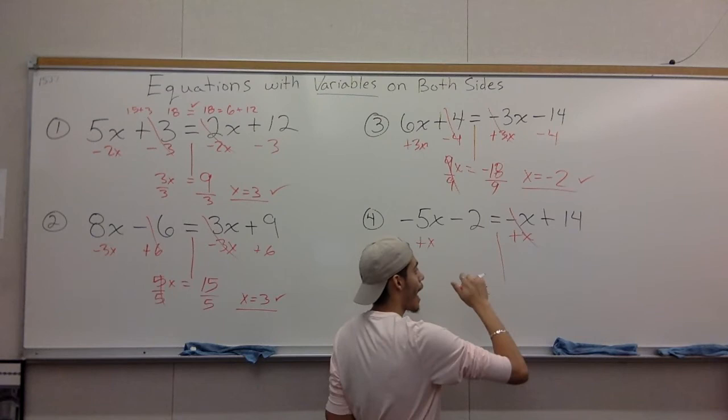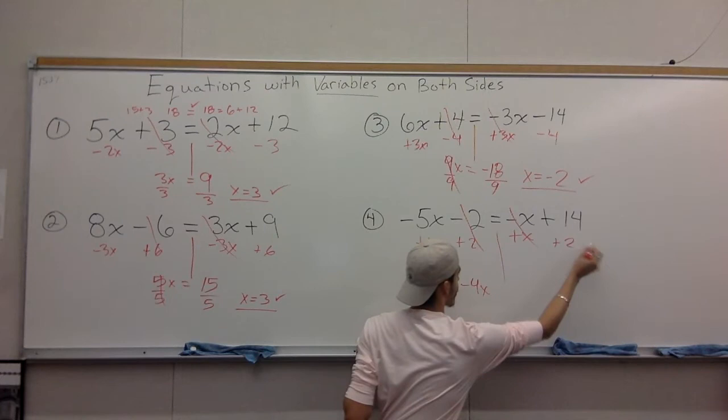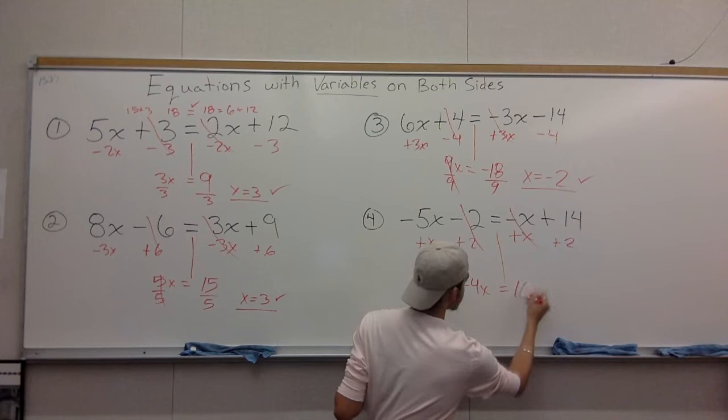You have this minus 2 here, we're going to add because we do the opposite. What you do to one side, you do to the other. Add 2 to the other side. 14 plus 2 equals 16.